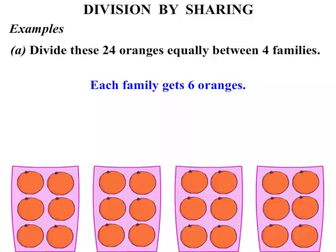Now as a number sentence: we had 24 oranges and we split it up between 4 families, so we can say 24 divided by 4, and our answer equals 6.